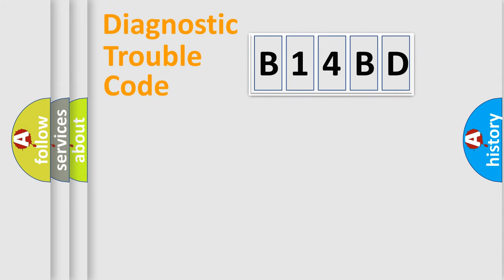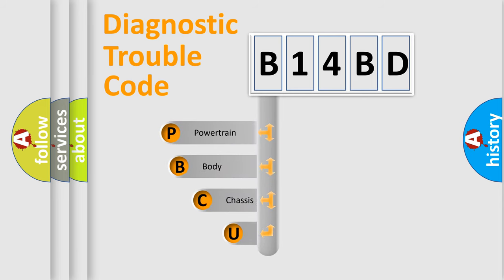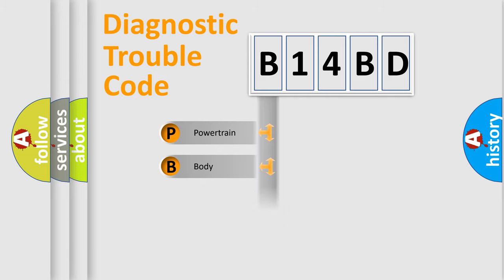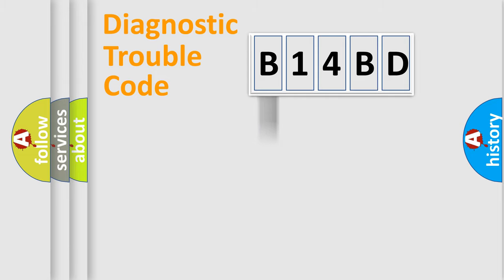First, let's look at the history of diagnostic fault code composition according to the OBD2 protocol, which is unified for all automakers since 2000. We divide the electric system of an automobile into four basic units: Powertrain, Body, Chassis, and Network.